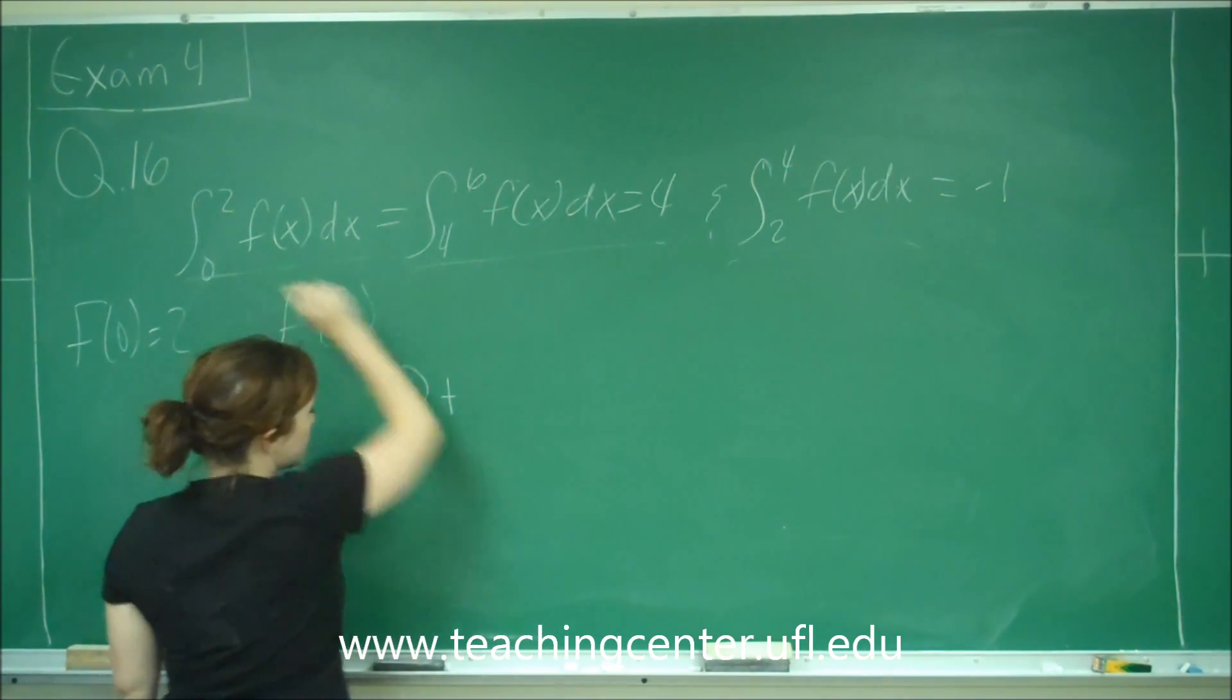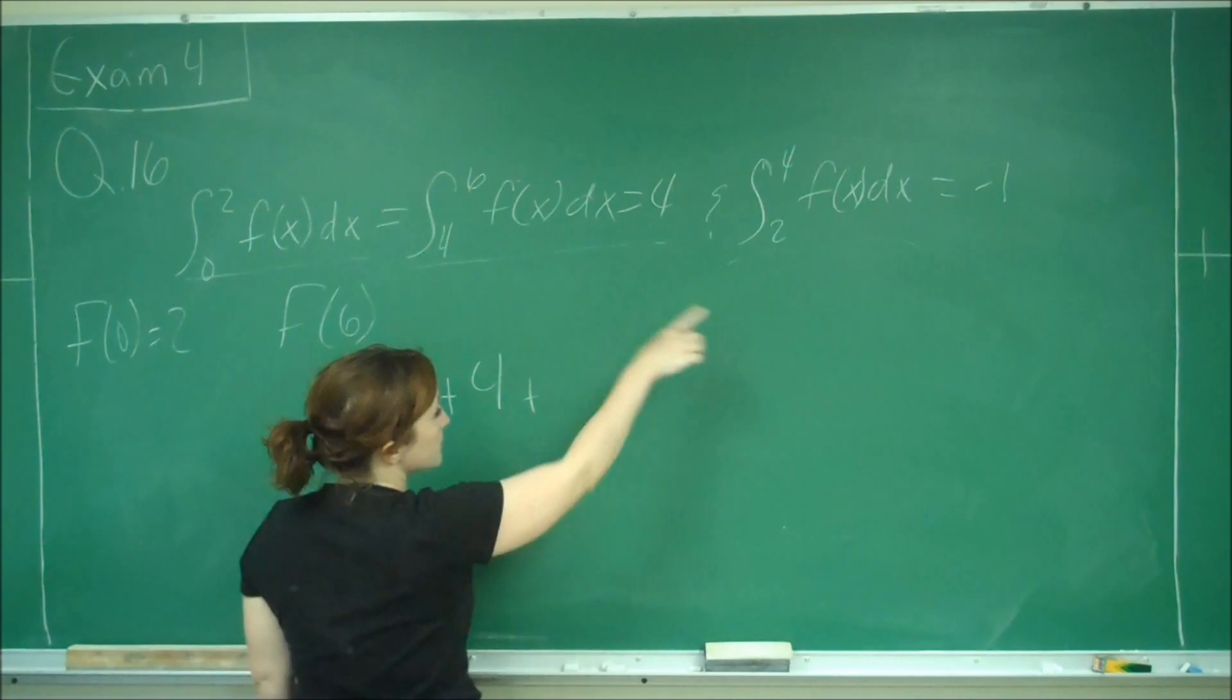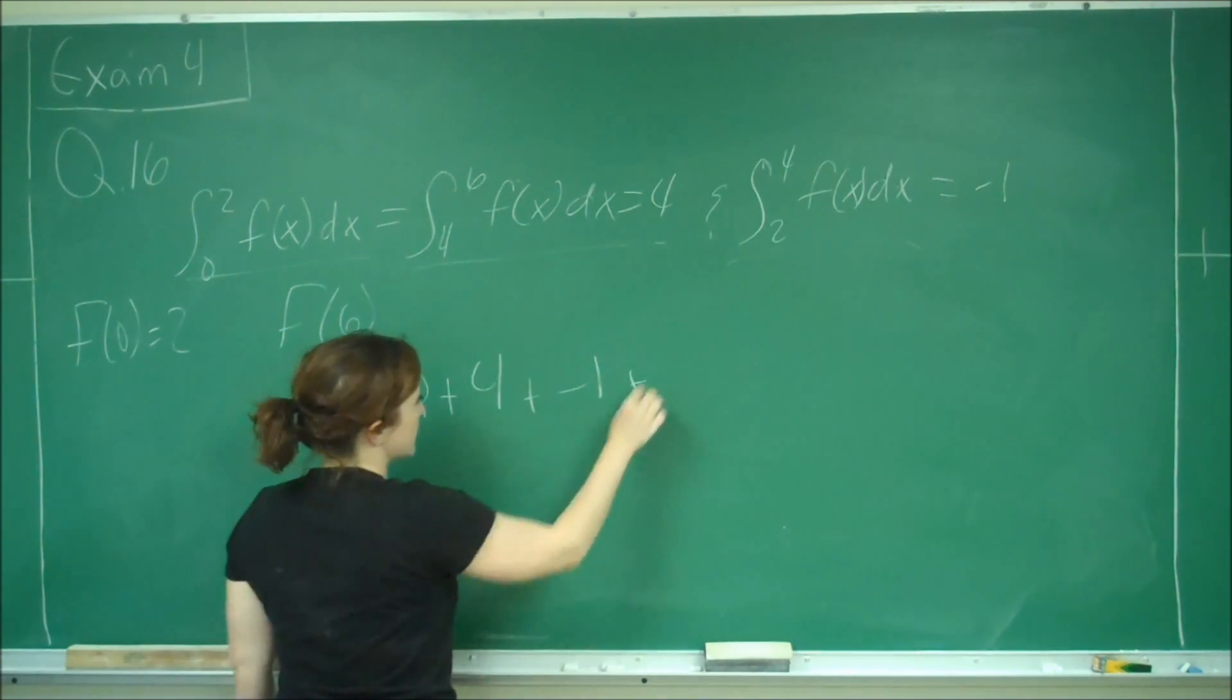And then from 0 to 2, it's 4. From 2 to 4, it's negative 1. And then from 4 to 6, it's 4.